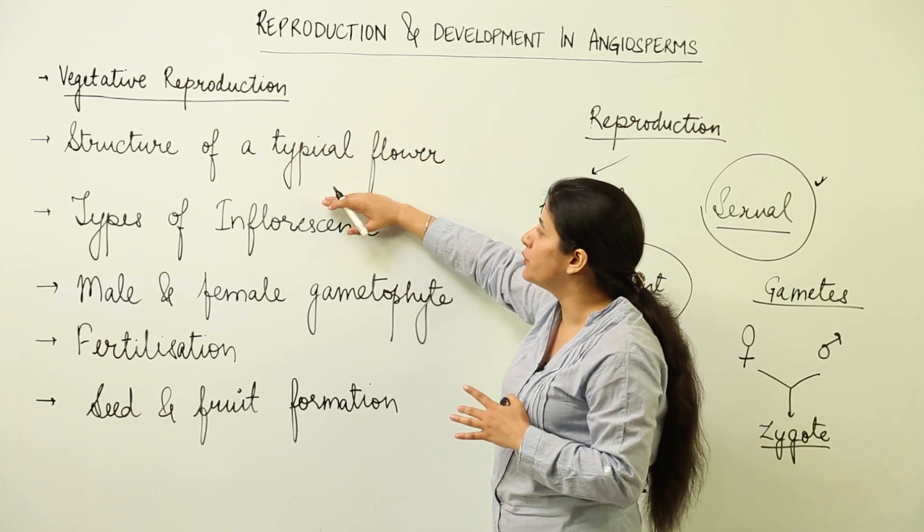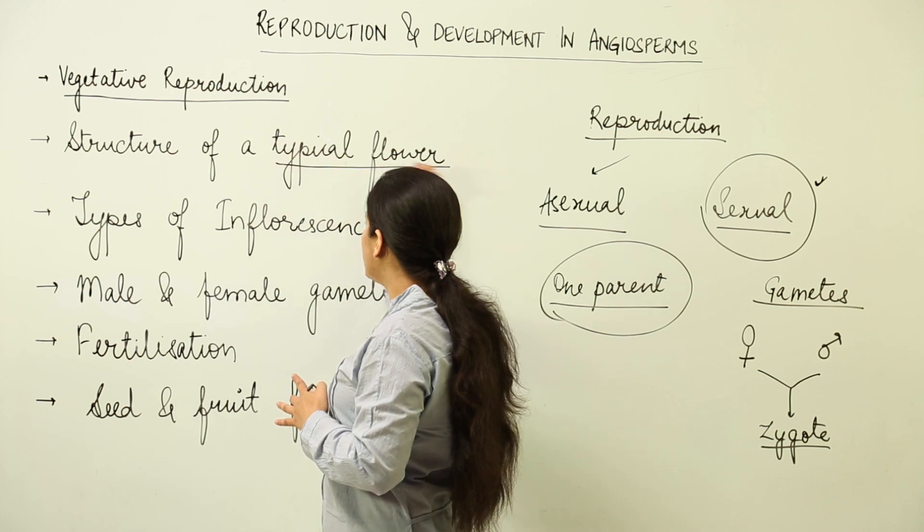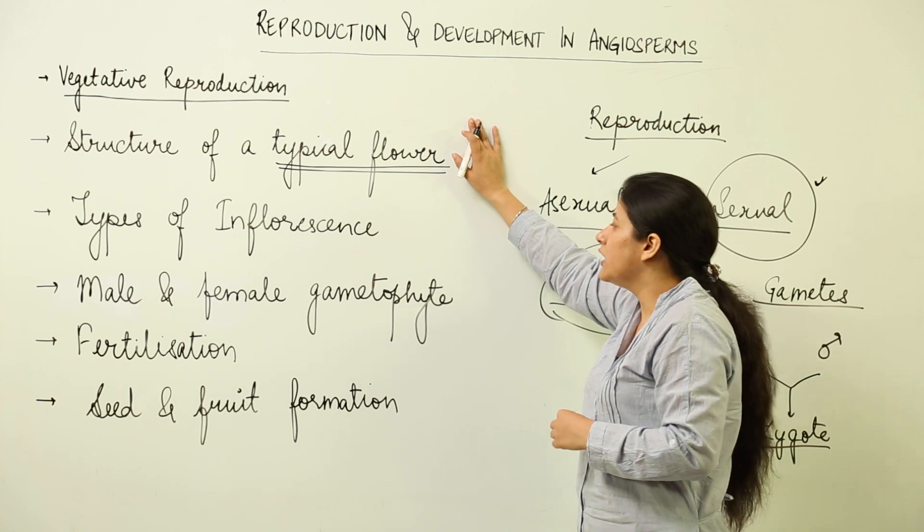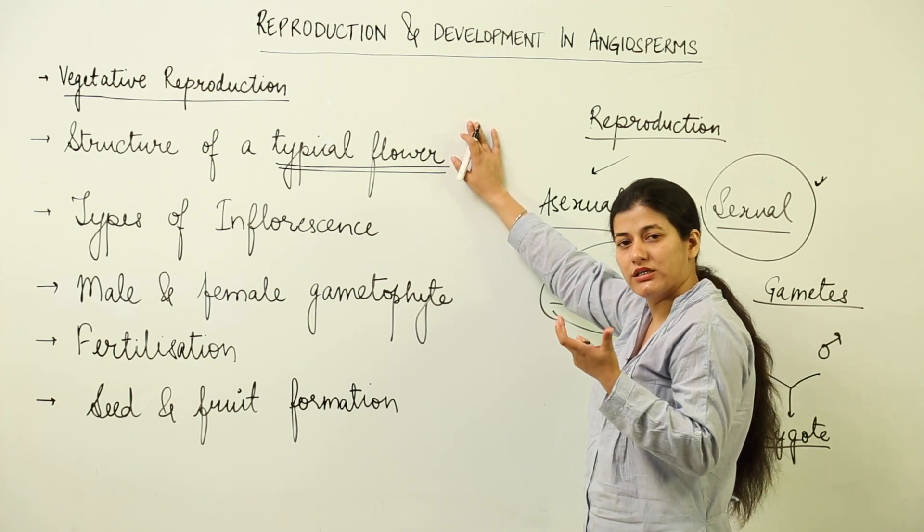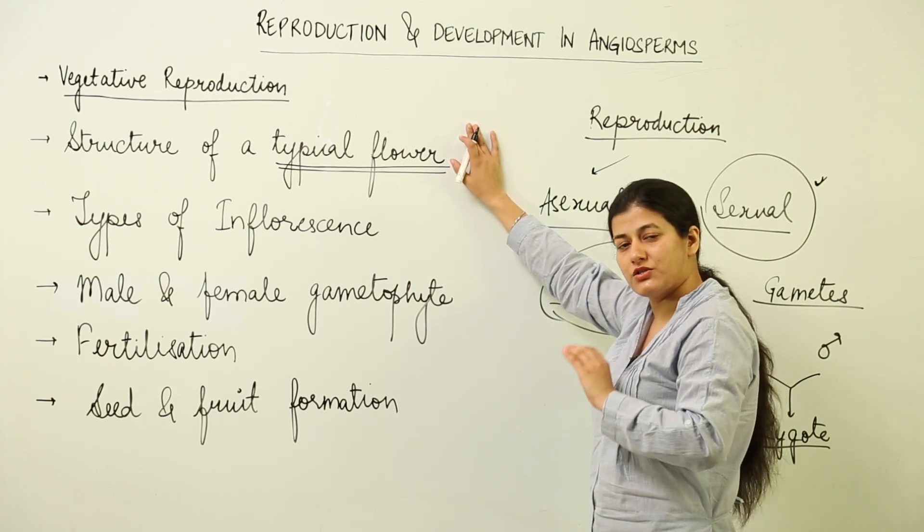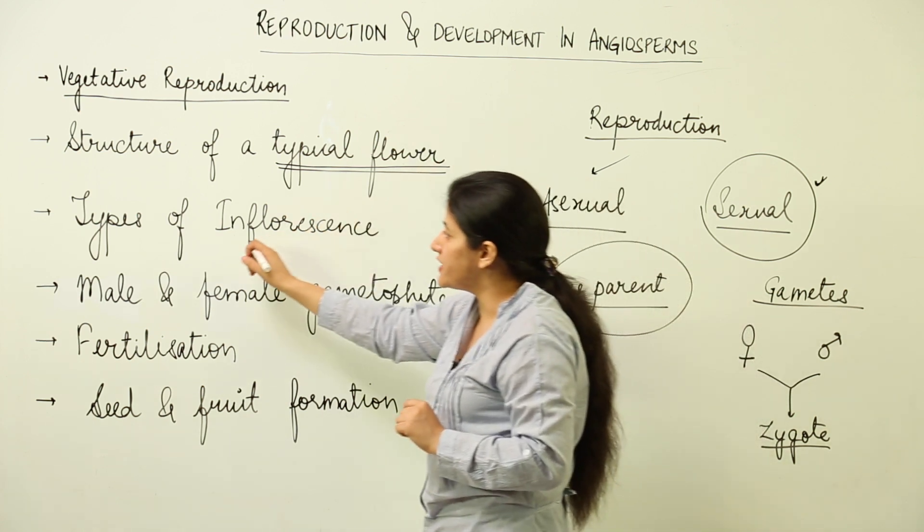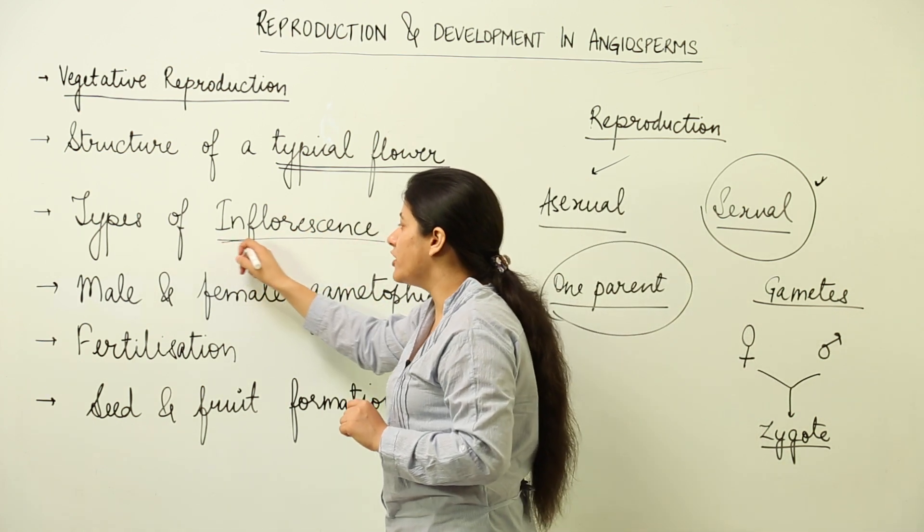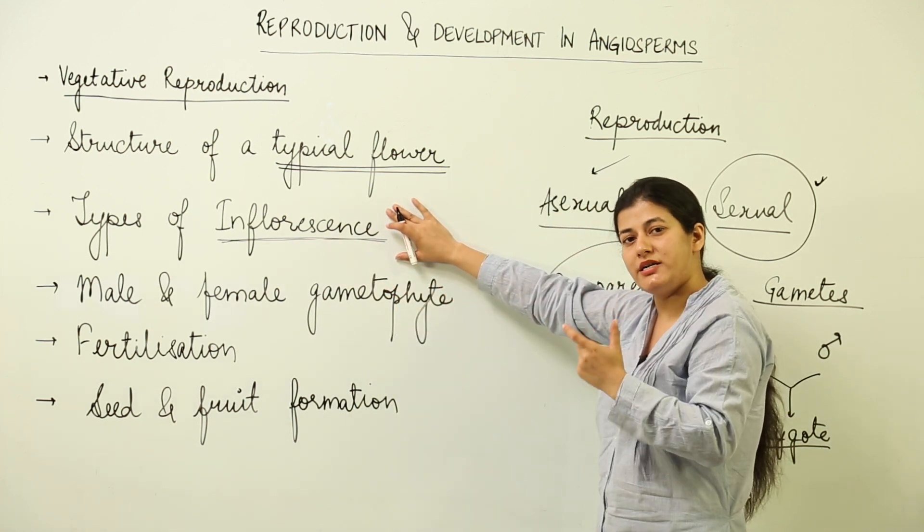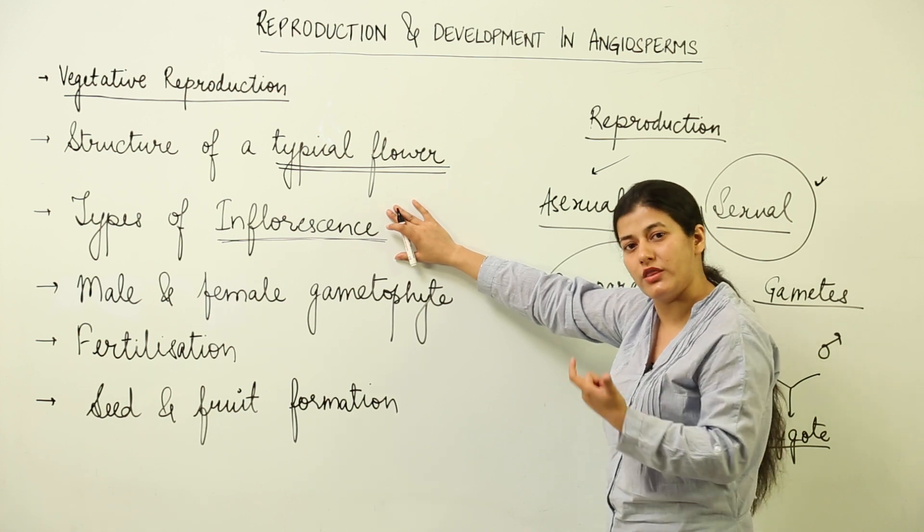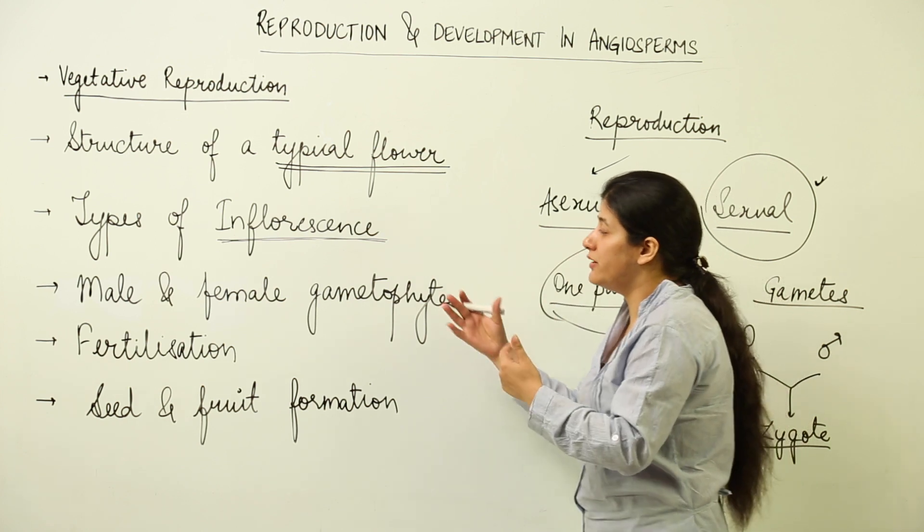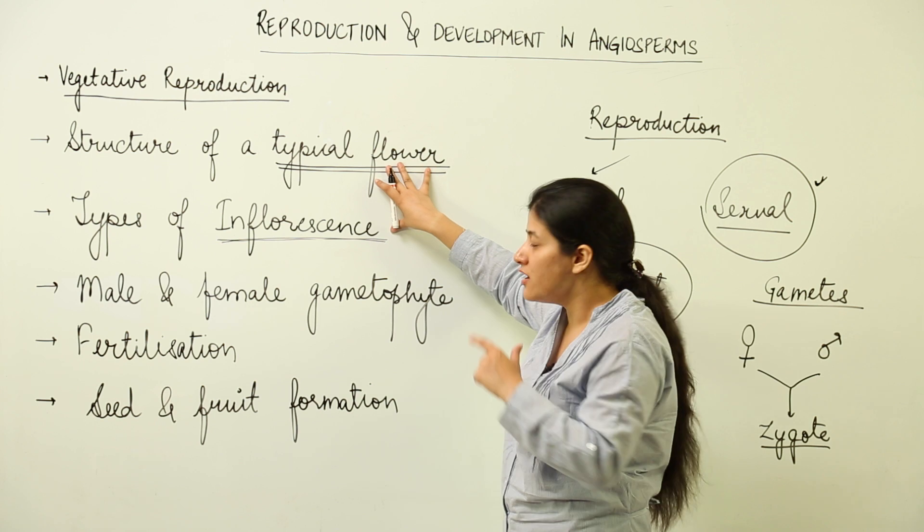Our next topic would be the structure of a typical flower that we are going to study. We will see what are the different whorls. It is again a morphological aspect. We are going to study the structure of a typical flower. The arrangement of flowers on the floral axis of the plant is termed as inflorescence. You have to keep in mind that inflorescence is a term that enables us to understand how the flowers are arranged on the plant itself. When we are well versed with these two aspects of the flower, we will come to the sites where male and female gametes would be formed inside the flower.